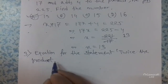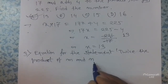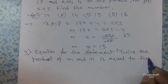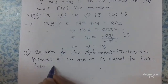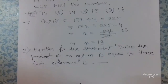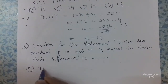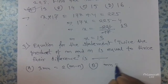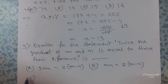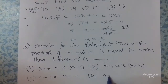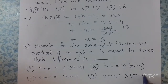Next problem: find the equation for the statement — twice the product of M and N is equal to thrice their difference. The options are: 3mn = 2(m − n), mn = 2(m − n), 2mn = (m − n), and 2mn = 3(m − n).